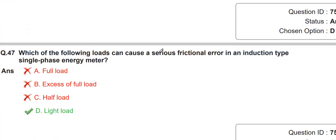Which of the following loads can cause a serious frictional error in an induction-type single-phase energy meter? That is light load. At light load, the frequency affects the meter and causes frictional error.